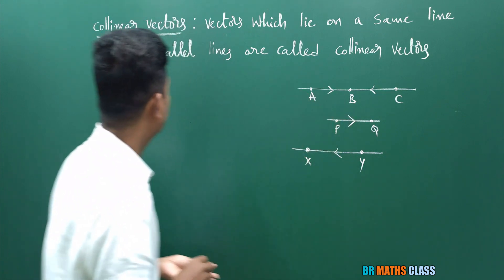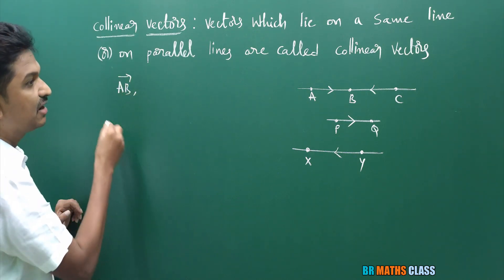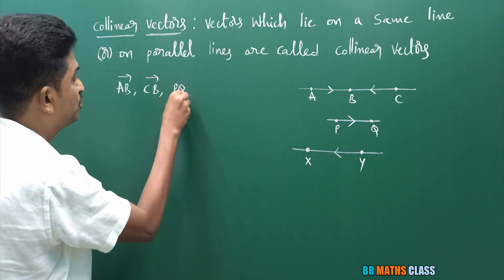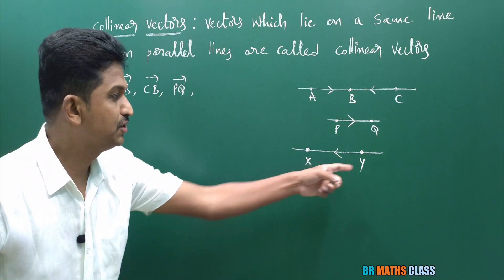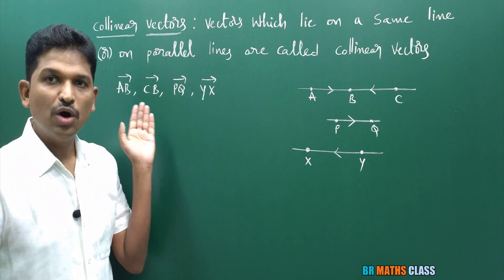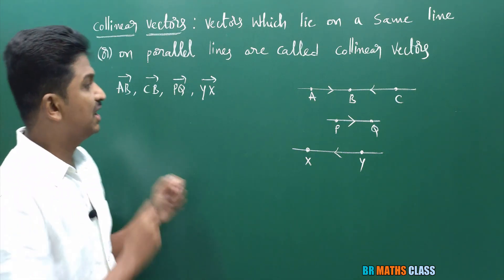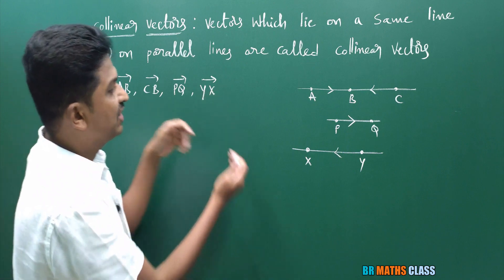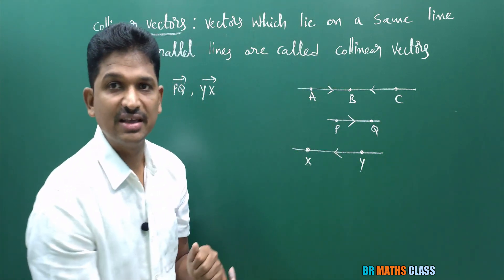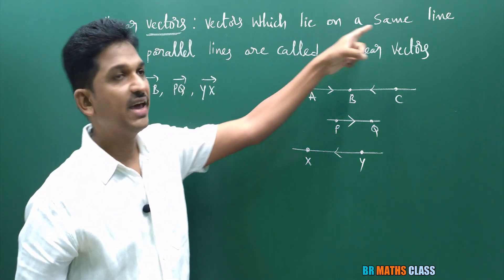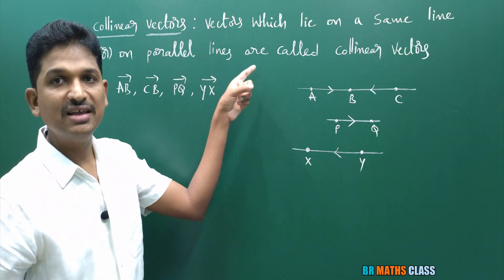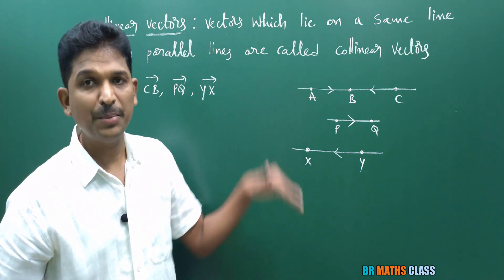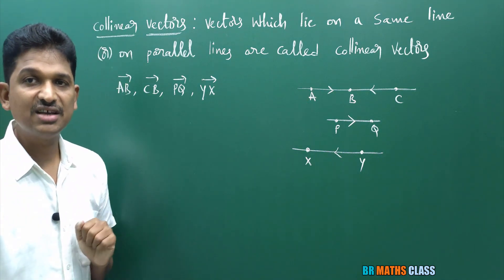You observe AB bar — AB bar is a vector present on one of those lines. AB bar and CB bar lie on a same line. And AB bar and YX bar are vectors which lie on parallel lines. These vectors either lie on a same line or on parallel lines. So we can say these vectors are collinear vectors. Yes, as per this definition, these vectors are collinear vectors. And the important point is collinear vectors are also known as parallel vectors.